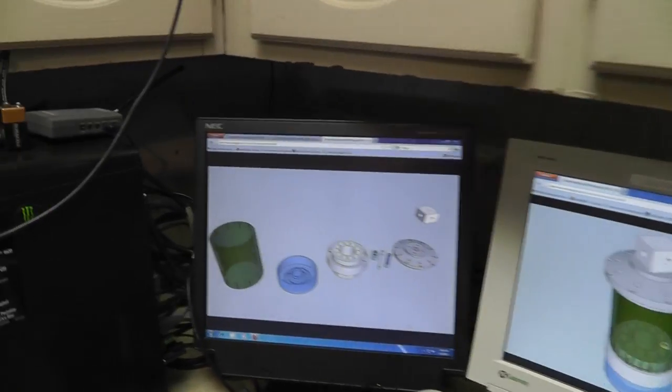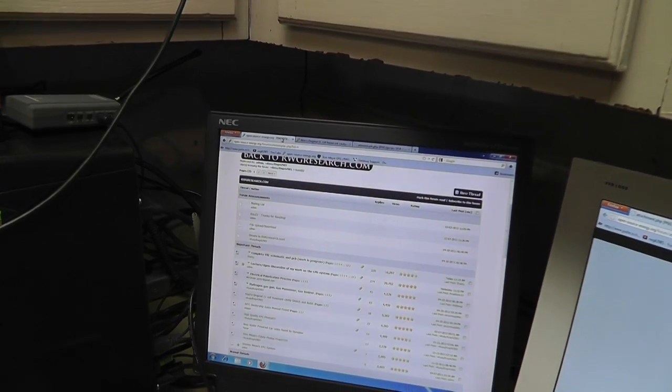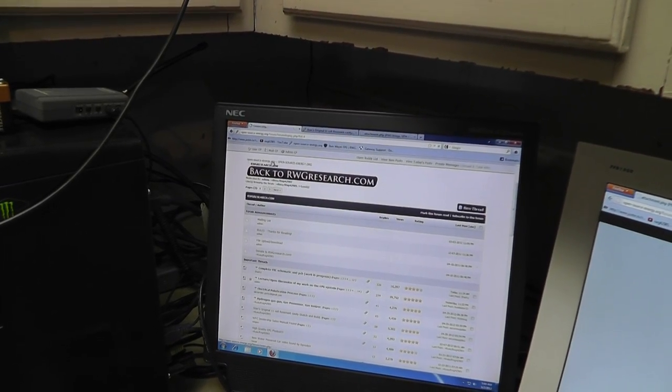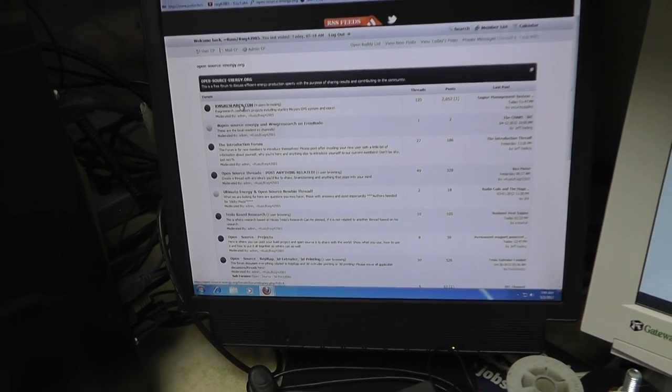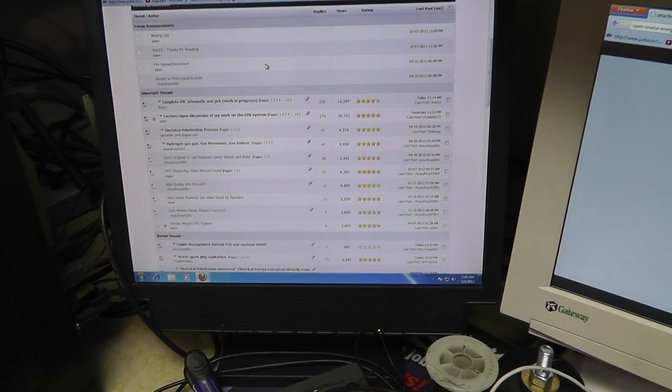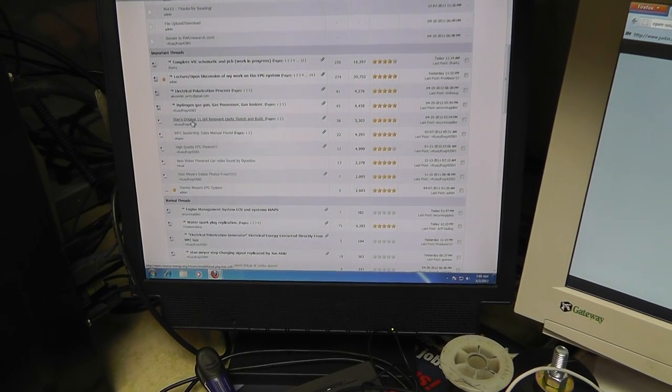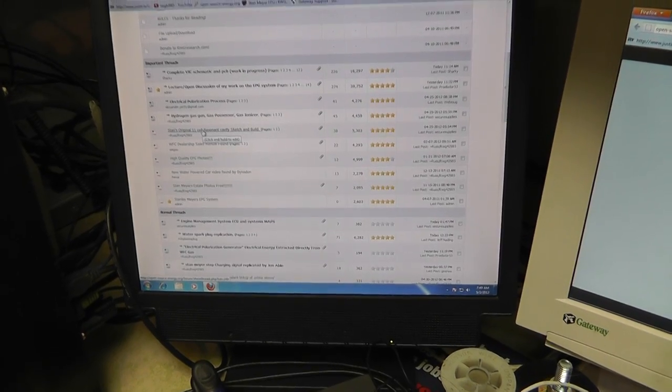I love doing this to you guys. So, 11 cell unit over at the forums open-source-energy.org. If you go to the main page it looks like this. You go to rwgresearch.com and it looks like this. Scroll down here, right here stands original 11 cell resonant cavity sketch and build. Right there. Click on that.